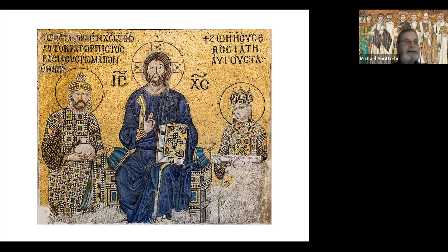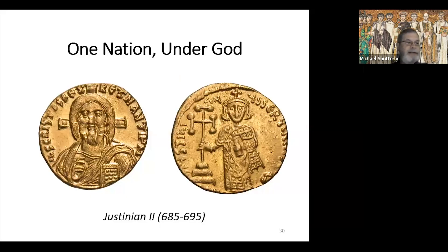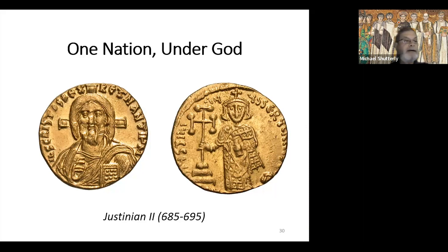Notice the portrait of Jesus in the mosaic: long hair, cross-halo behind his head — a cruciform nimbus — right hand giving a blessing, left hand holding the Gospels. Does that remind you of anything? Remember the coin of Justinian II from his first reign, which portrayed Jesus with long hair, the cross-halo behind his head, right hand blessing, left hand holding the Gospels. Both images are probably based on the same ancient icon.